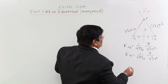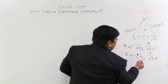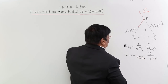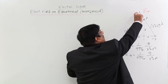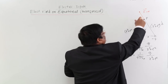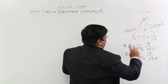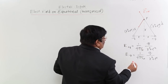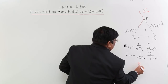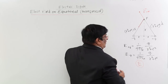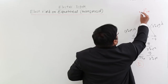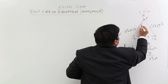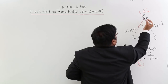Since the magnitudes of both electric fields are the same, I label both simply as E. Both are equal in magnitude, represented by equal-length vectors, and I need to find their resultant. The resultant of these two vectors E due to plus Q and E due to minus Q gives the net electric field at point P.